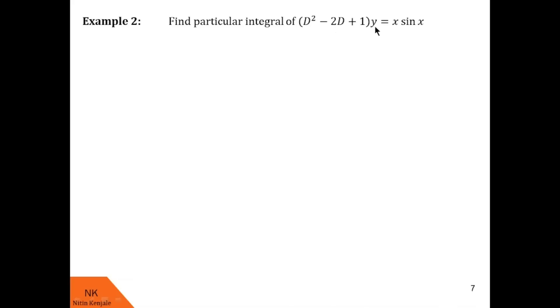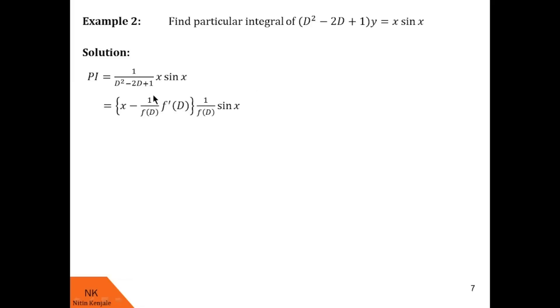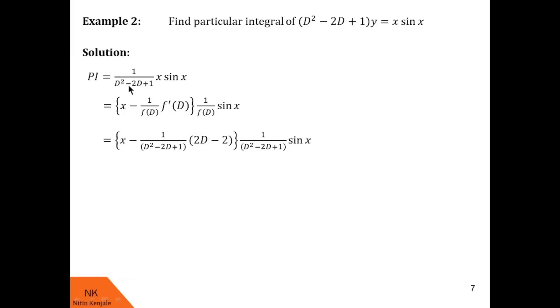Here the question is to find the particular integral of (D² − 2D + 1)y = x·sin(x). The corresponding particular integral is given by 1/f(D) of x·sin(x), where f(D) = D² − 2D + 1. We use the formula x minus 1/f(D) times f'(D) times 1/f(D) of sin(x), since the RHS is of the type x·v where v is sin(x). Let us substitute for f(D) and f'(D); f'(D) would be 2D − 2.